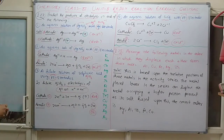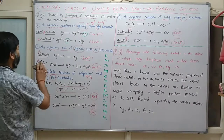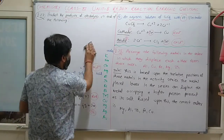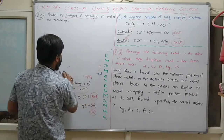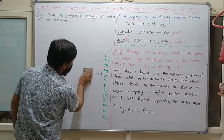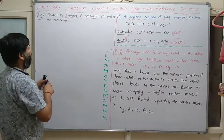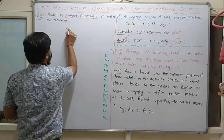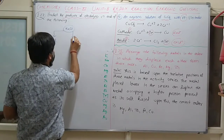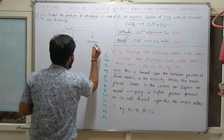Now for NaCl, three different situations arise: dilute NaCl (more water present), concentrated NaCl, and molten NaCl. In dilute NaCl, water dissociation takes place because water is present in more amount. O₂ deposits at anode and H₂ at cathode from water decomposition.